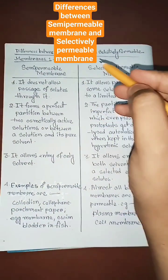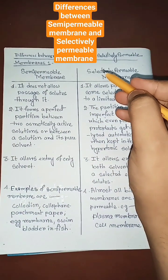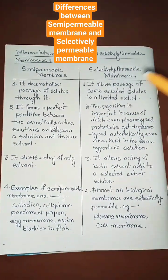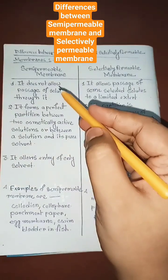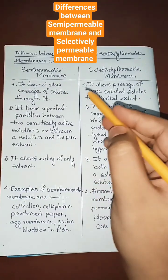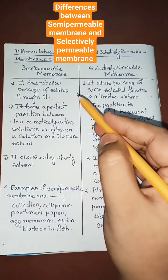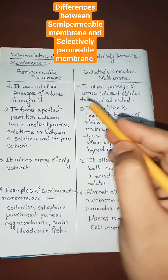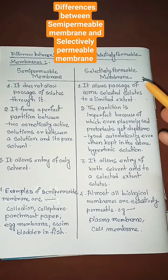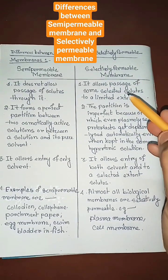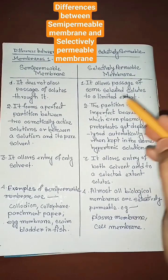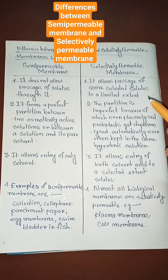Differences between semi-permeable and selectively permeable membranes: a semi-permeable membrane does not allow passage of solutes through it, but a selectively permeable membrane allows passage of some selected solutes to a limited extent.